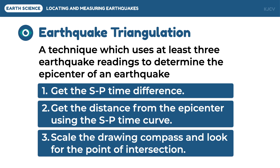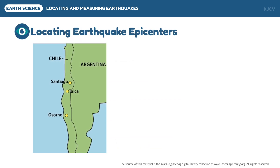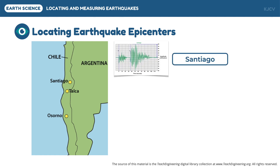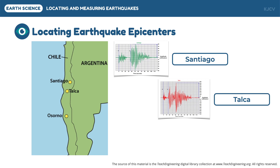To further understand the process of locating earthquake epicenters by earthquake triangulation, we are going to look at an earthquake which happened in Chile. Since we need at least three locations, we are going to use seismograms from Santiago, Talca, and Osorno.